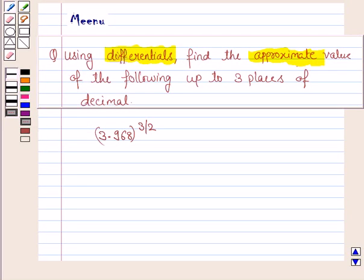Hello friends, let's work out the following problem. It says, using differentials, find the approximate value of the following up to three places of decimal. And the given number is 3.968 to the power 3 by 2.